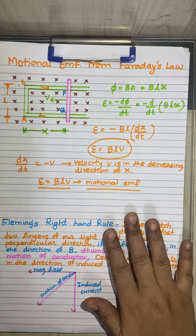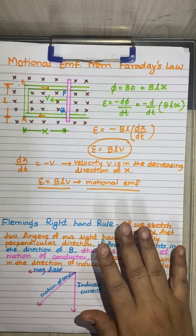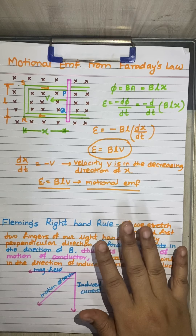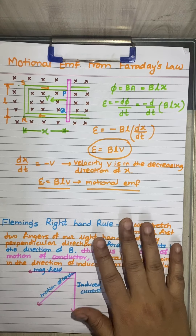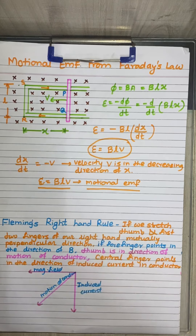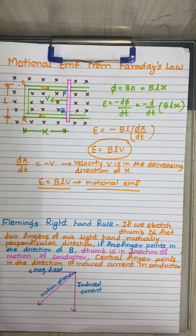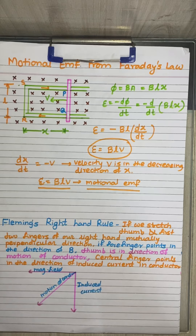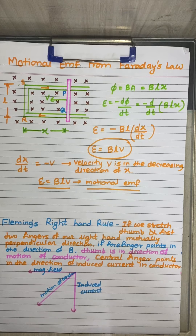Based on this concept, the generator principle is derived. Fleming's right-hand rule is used for explaining generators — AC generators and DC generators are all based on this particular concept.